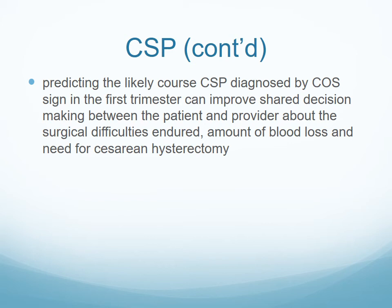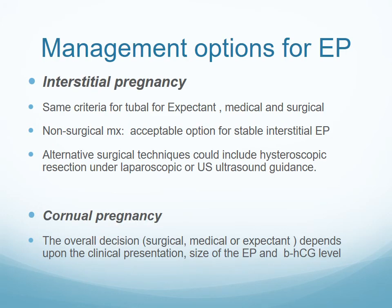Predicting the likely course of a cesarean scar pregnancy diagnosed as COS-1 in the first trimester can improve shared decision-making between the patient and provider regarding surgical difficulties, anticipated blood loss, and need for cesarean hysterectomy. For interstitial and cornual pregnancy, management options are the same as for tubal pregnancy — expectant, medical, and surgical — based on clinical presentation, size, beta-hCG level, and presence or absence of fetal heart. Additionally, hysteroscopic resection can be offered for interstitial pregnancy.